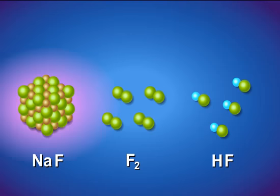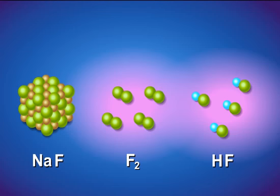In ionic bonding, an octet is formed by transferring one or more valence electrons from one atom to another. In covalent bonding, an octet is formed by sharing valence electrons between atoms.